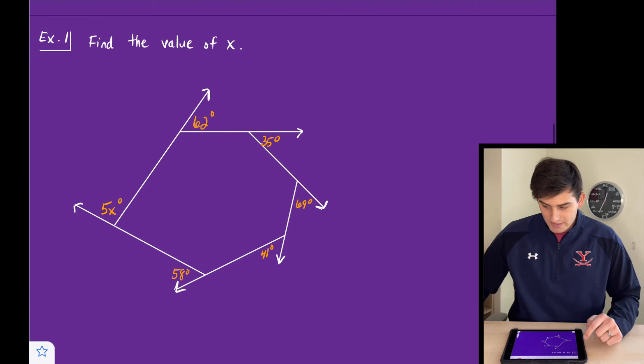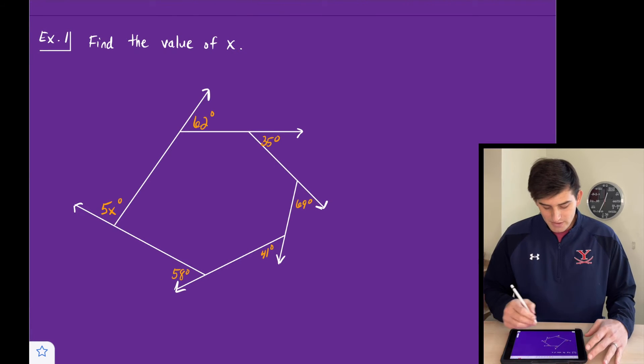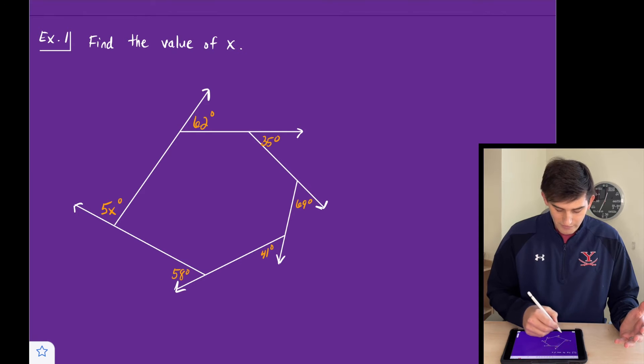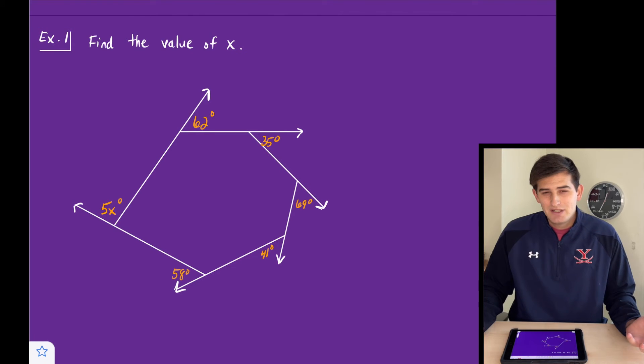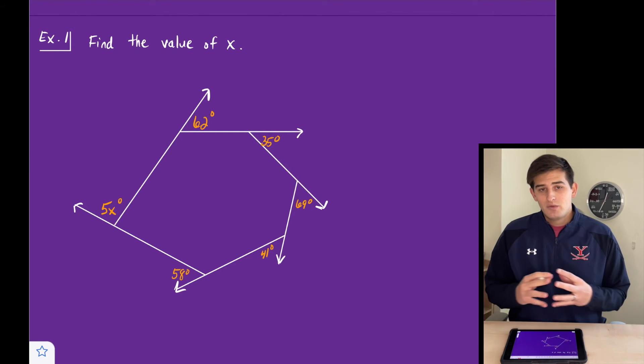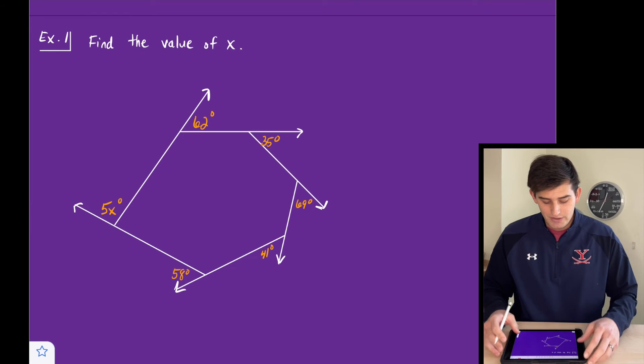So example number one just says find the value of x. We see we have one, two, three, four, five, six exterior angles. It really doesn't matter how many we have. We just know we're going to add those up and they're going to equal 360 degrees.